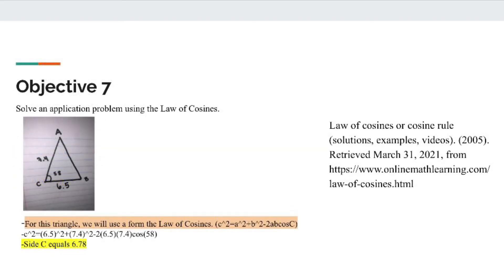Now we're on to objective seven, which tasks us to solve an application problem using the law of cosines. My triangle has side b equals 7.4, we don't know c, but we do know c's angle is 58 degrees, and side a equals 6.5.